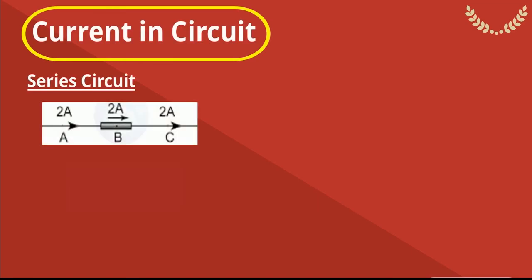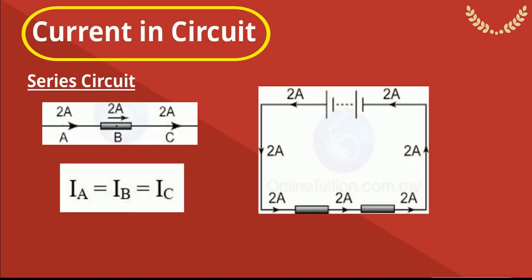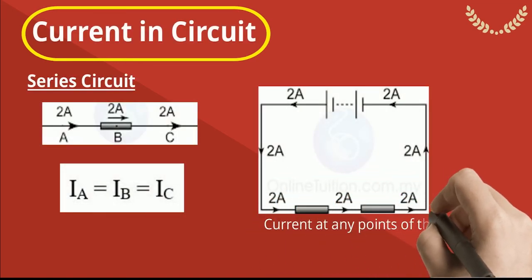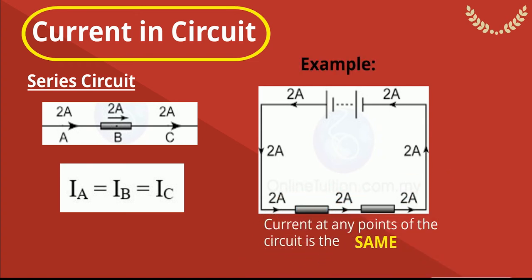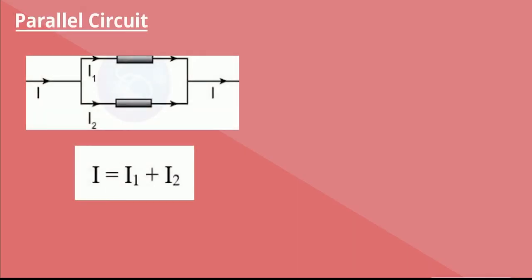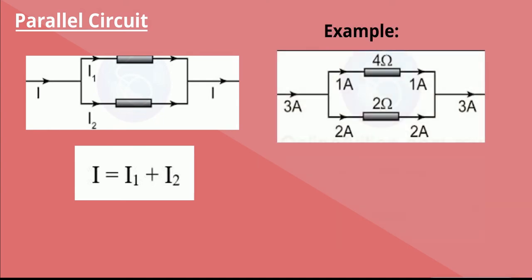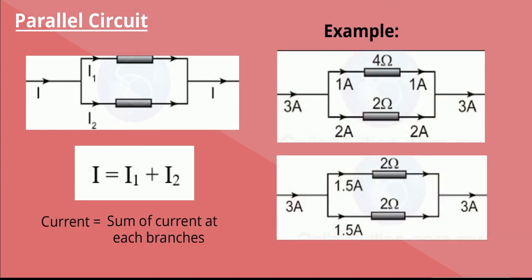In a series circuit, the current flow into a resistor is equal to the current flow inside the resistor, which is equal to the current flow out of the resistor. The current at any point of the circuit is the same. In a parallel circuit, the current flow into the parallel circuit is equal to the sum of the current in each branch. If the resistance of the two resistors is the same, the current will be divided equally to both resistors.